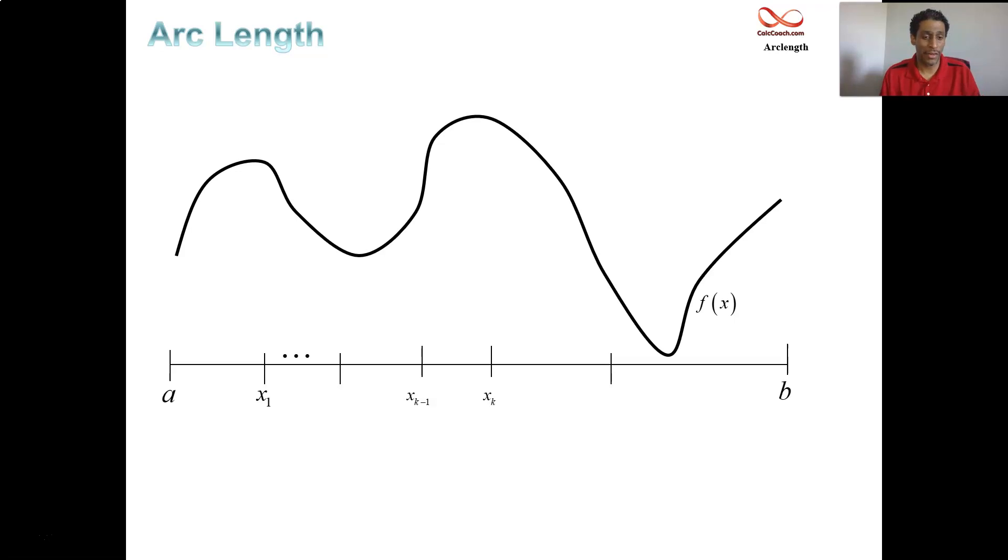So, like with other derivations, what we do is we take the interval and we chop it into subintervals: x1, x2 generically, xk minus 1, xk, keep on going until you get to b. And we simplify things by first approximating. Instead of traveling along the curve, we can simplify things by traveling along the polygon path, straight lines.